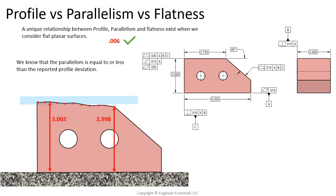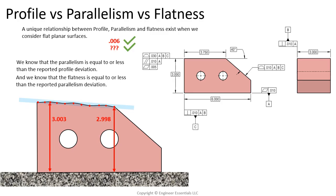The parallelism tolerance zone is able to move freely up and down and is not controlling location — the only requirement is that the tolerance zone stays parallel to the datum listed. Since our parallelism specification is ten thousandths and we are at least six thousandths or less, we can pass this for parallelism. Flatness is equal to or less than the reported parallelism deviation, but that's not enough for us to reject this part for flatness because the flatness tolerance zone can move and rotate in all directions as long as all elements of that surface fit inside the zone.